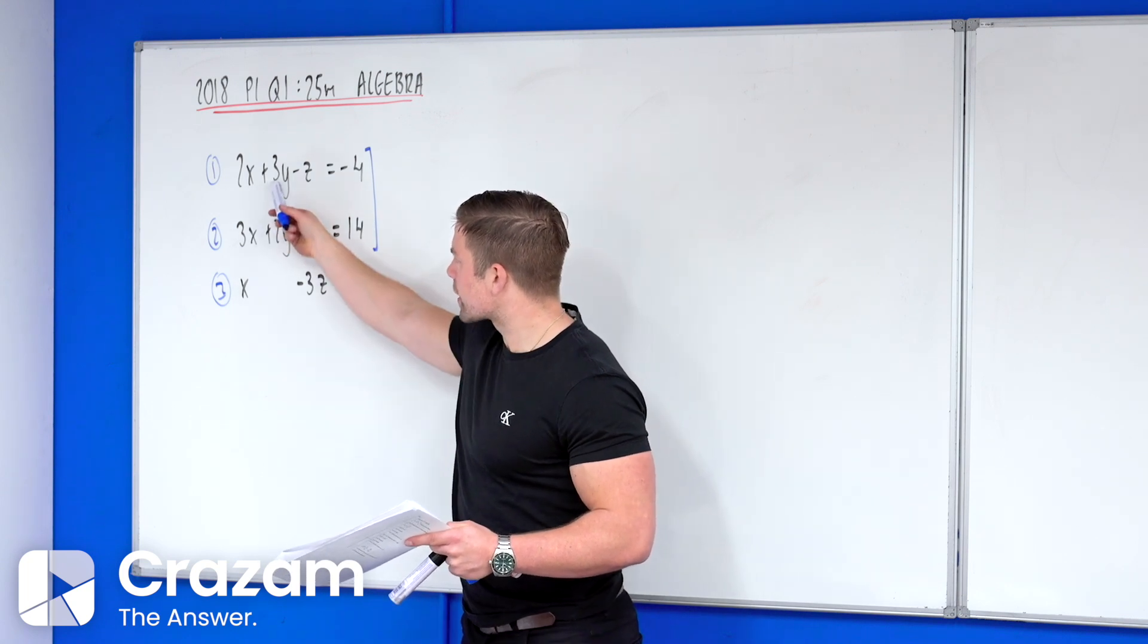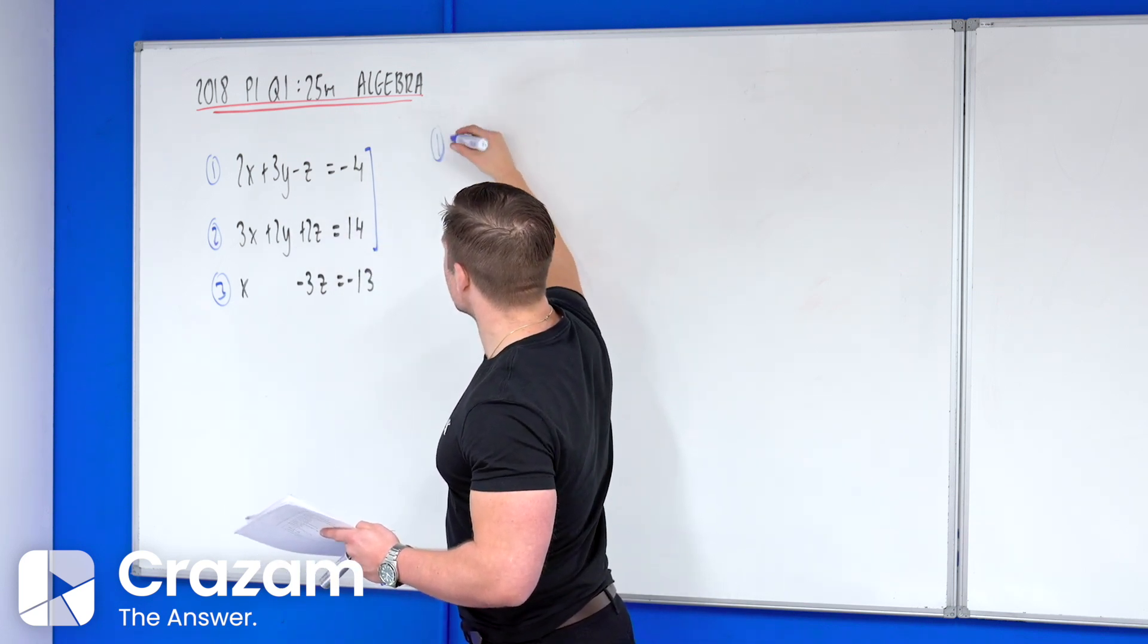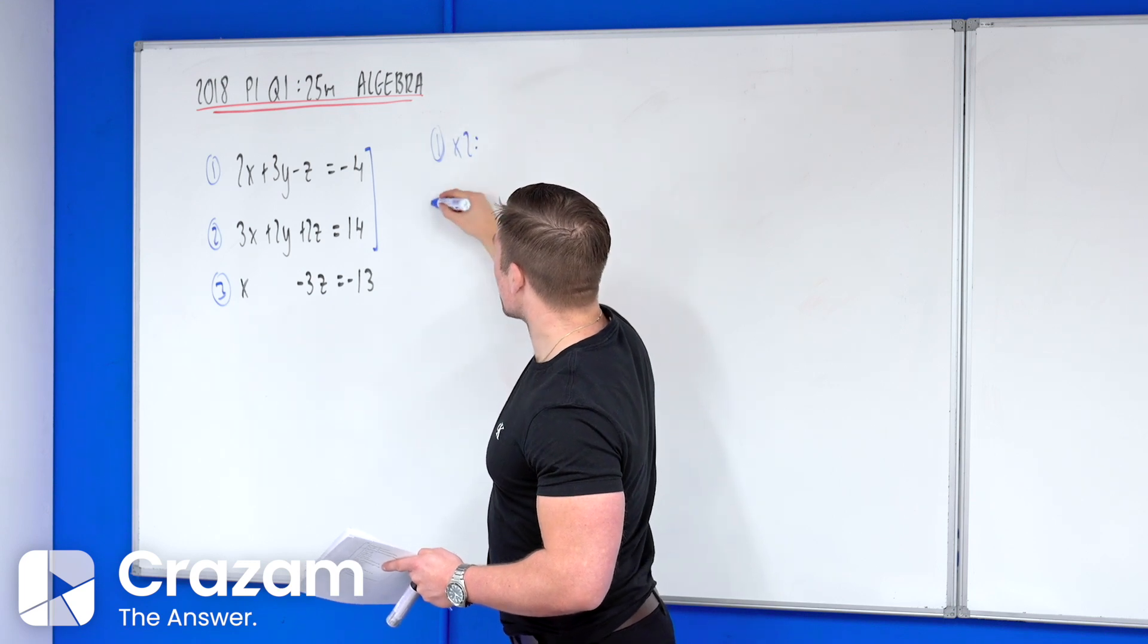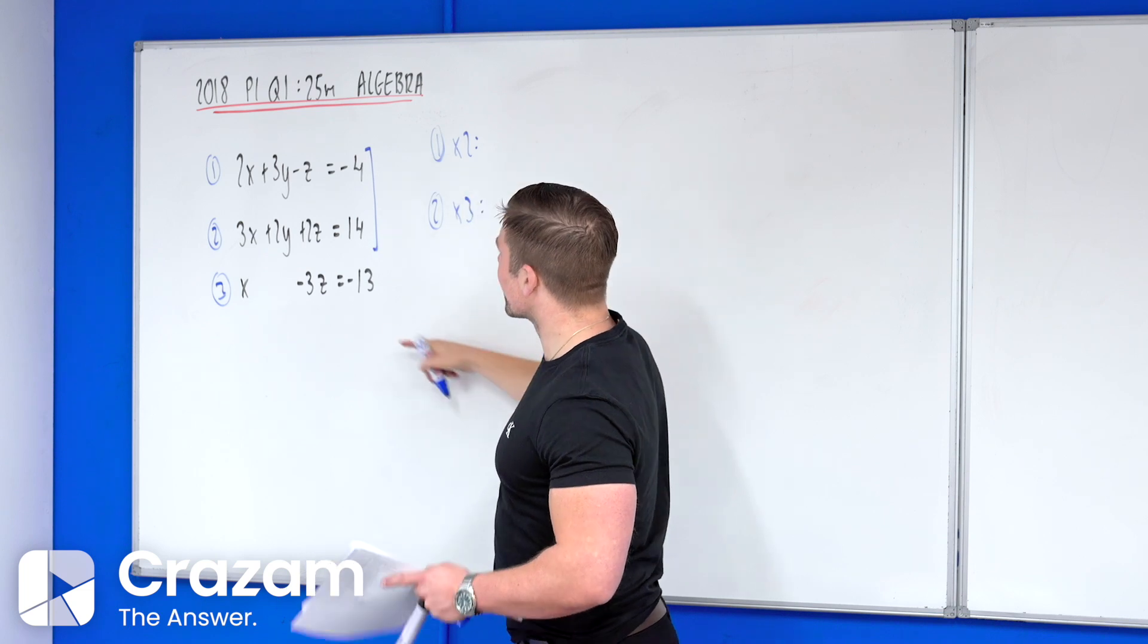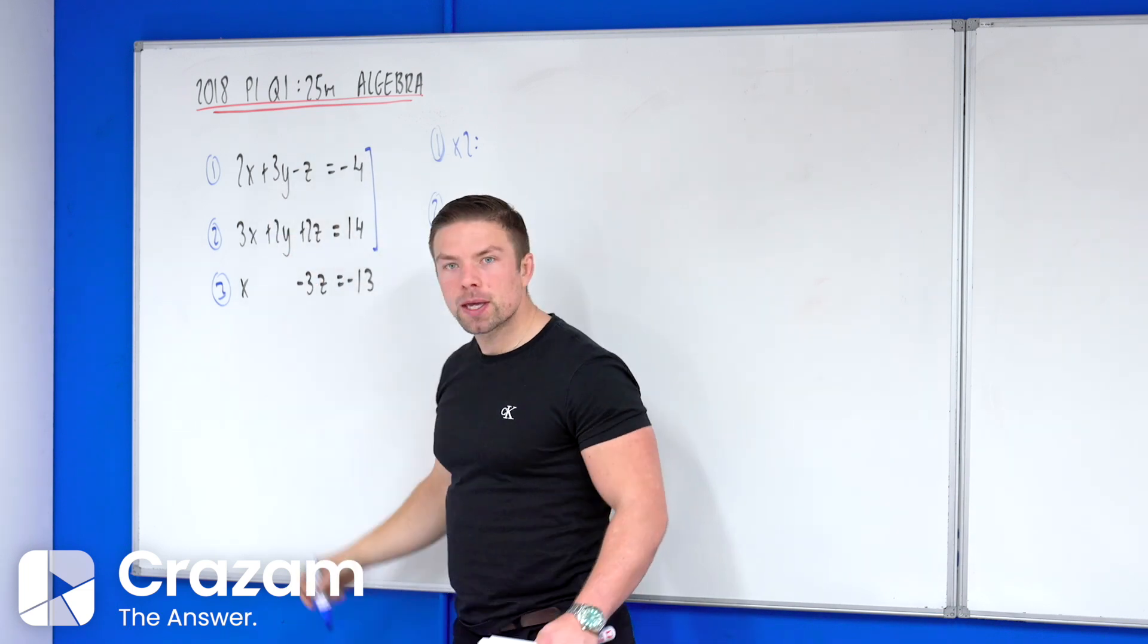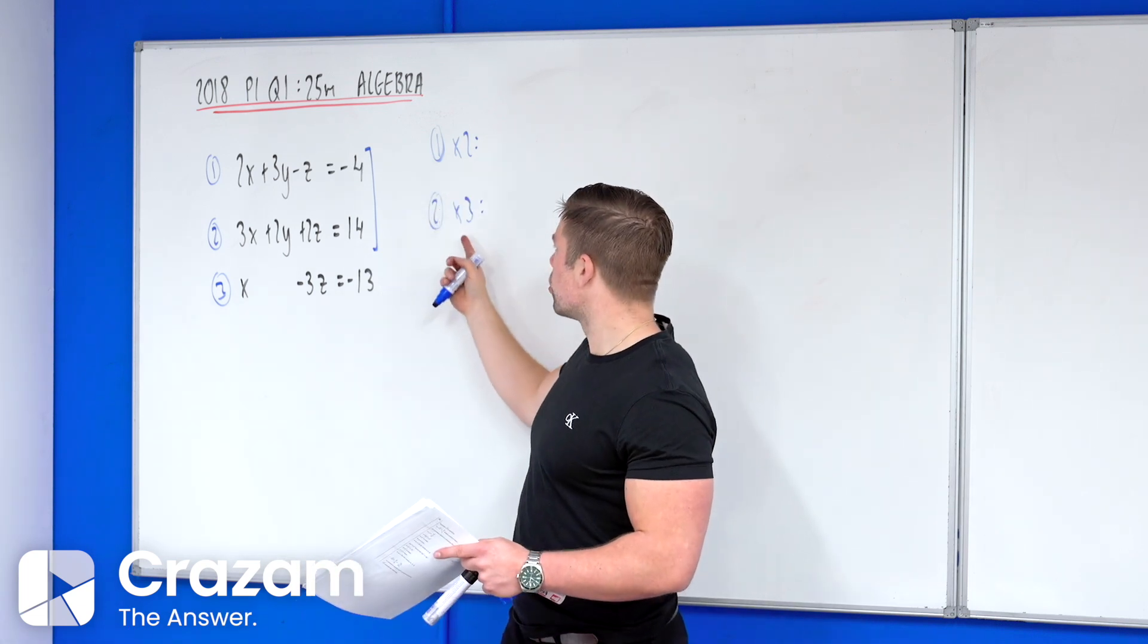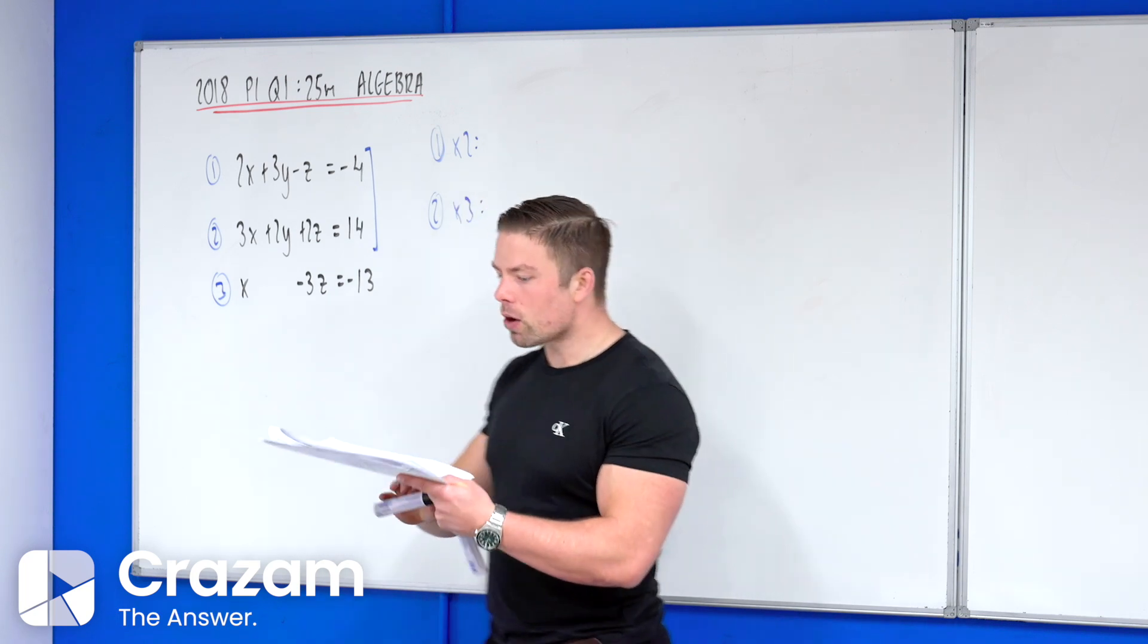So we're going to get rid of y in this case. We have to set up those equations, we can't leave them as they are. So if I take equation one and multiply by two, and I take equation two and multiply by three, that will give me the same coefficient of y. Many people do this slightly differently. If you multiply by minus two or minus three that's fine.